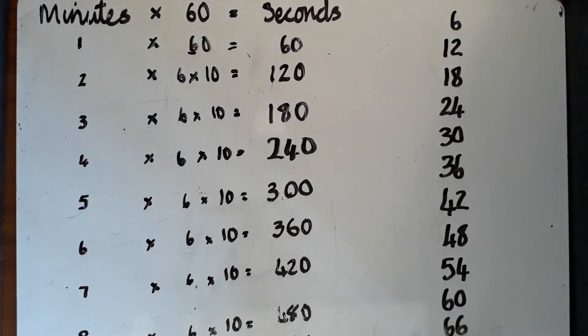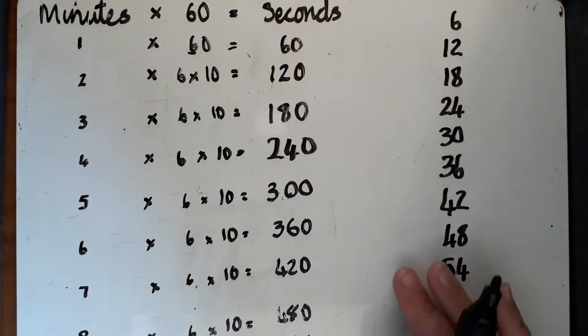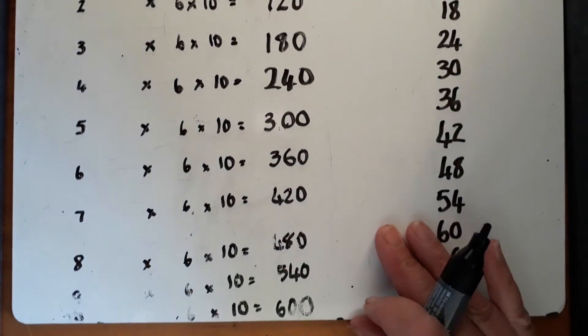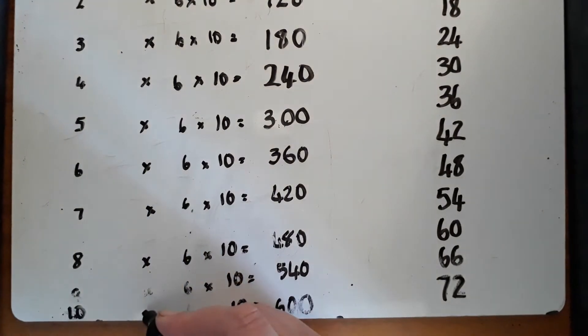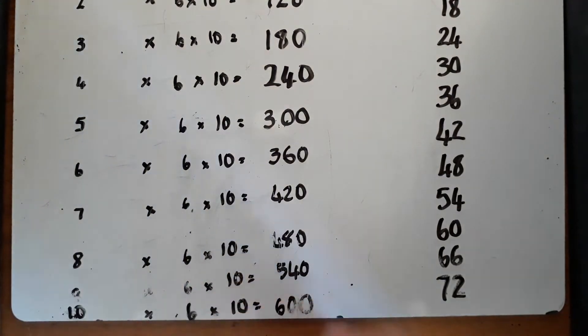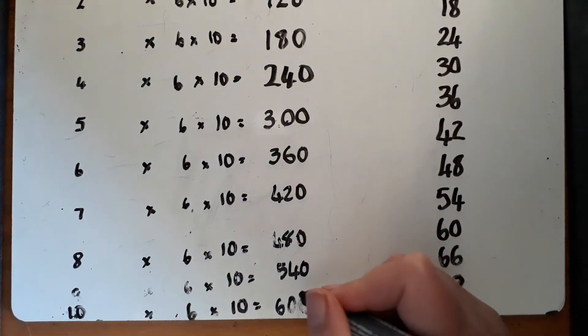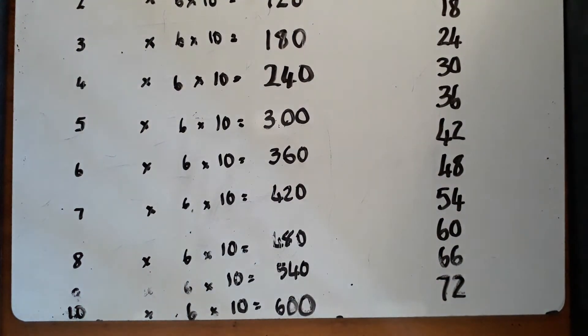I think I've got all the way to a very rough looking 10 right at the bottom. 10 times 6, so that's 10 minutes, and if I want to know how many seconds there are, I can do 10 times 6 times 10, which is 600 seconds.